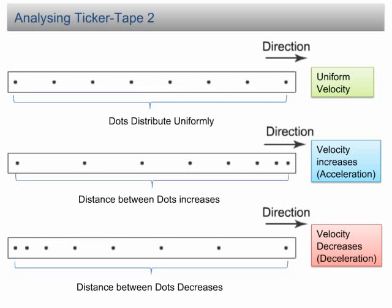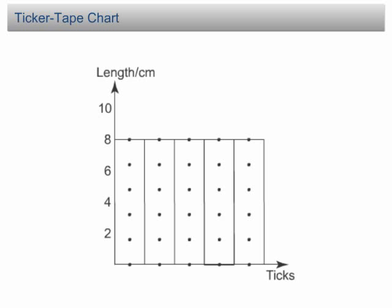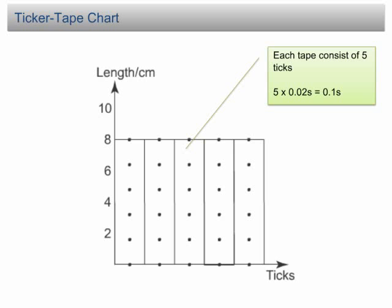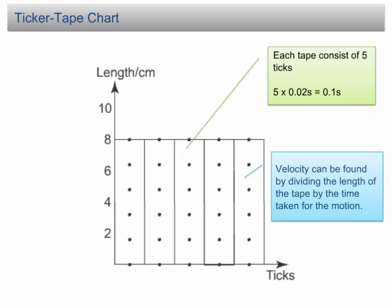The closer the dots, the slower the motion. The further apart the dots, the faster the motion. Ticker tape chart. Ticker tape can be cut into strips of equal time — equal number of ticks — and pasted on graph paper to form a ticker tape chart. Each tape consists of 5 ticks, which is equivalent to 0.1 second. The velocity of each tape can be found by dividing the length of the tape by the time taken for the motion. The length of the tape represents the velocity. In this case, all the tapes have equal length, showing that the object moved at uniform velocity.